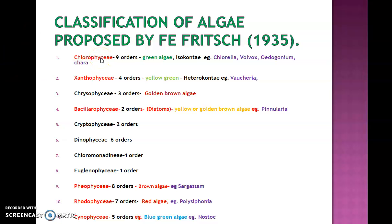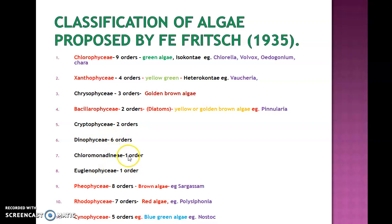The 11 classes are further divided into orders. Chlorophyceae has 9 orders, Xanthophyceae has 4 orders, Chrysophyceae has 3 orders, Bacillariophyceae and Cryptophyceae have 2 orders each, Dinophyceae has 6 orders, Chloromonadinae and Euglenophyceae are single-order classes, Phaeophyceae has 8 orders, Rhodophyceae has 11 orders, and Cyanophyceae has 5 orders.